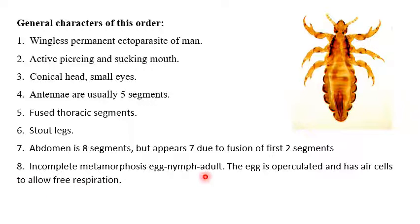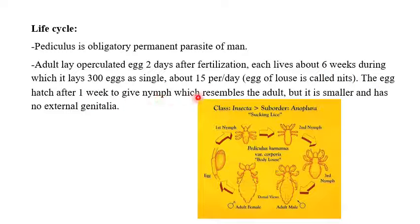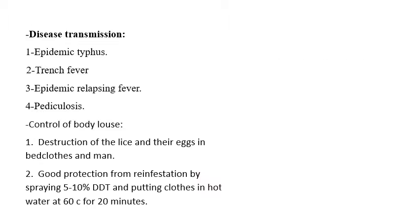In insects, incomplete metamorphosis means egg, nymph, adult; while complete metamorphosis means egg, larvae, pupa, adult. Life cycle of the louse: it is an obligatory permanent parasite of man. The adult lays an operculated egg two days after fertilization. Each louse lives about six weeks, during which it lays 300 eggs — about 15 per day. The egg attached to hair or clothes is called a nit. The egg hatches after one week to give a nymph, which resembles the adult but is smaller and has no external genitalia. Stages: first nymph, second nymph, third nymph, then adult.